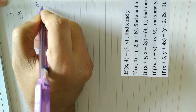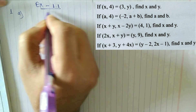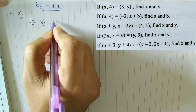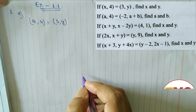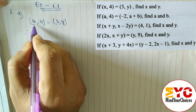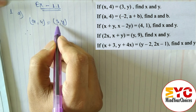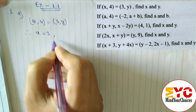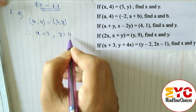This is Exercise 1.1, Question 1. In part a, x4 is equal to 3y. We have to find the value of x and y. Looking at the x component, we have x equal to 3, and from the y component, 4 is equal to y, so y is equal to 4.